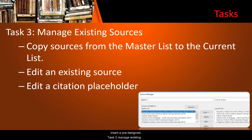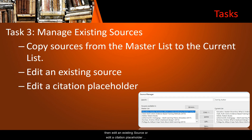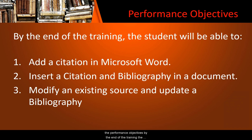Task 3: manage existing sources. Use the master list sources in any document. Copy sources from the master list to the current list. The current list is where Word will draw information for citations and bibliography for the current document. You can then edit an existing source or edit a citation placeholder.